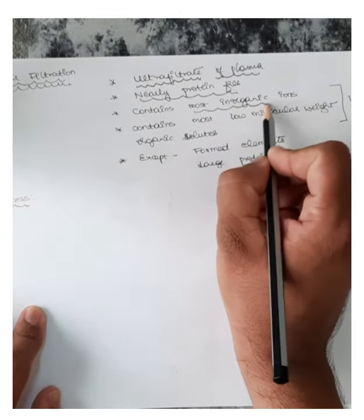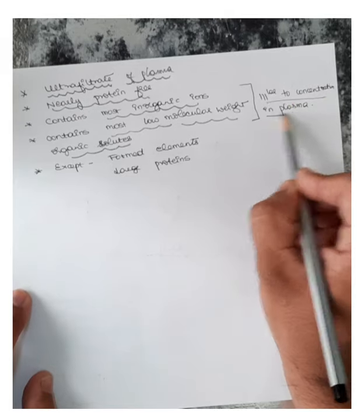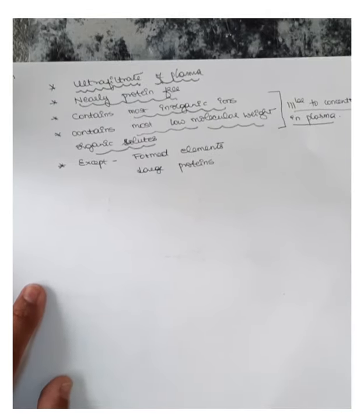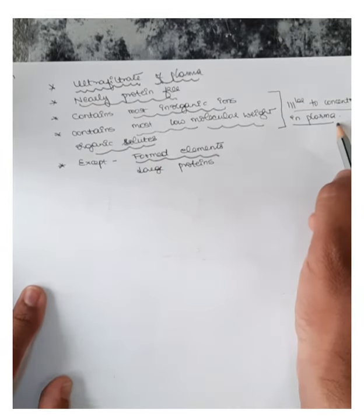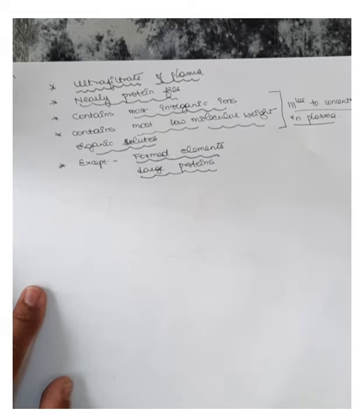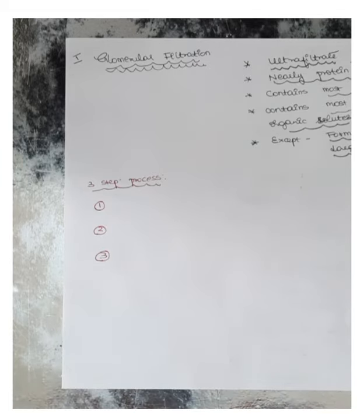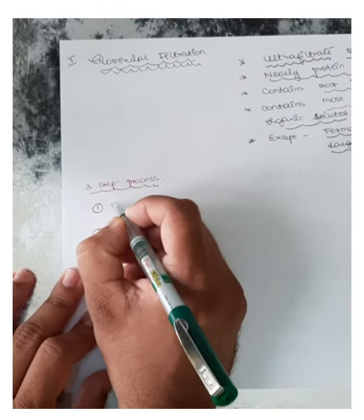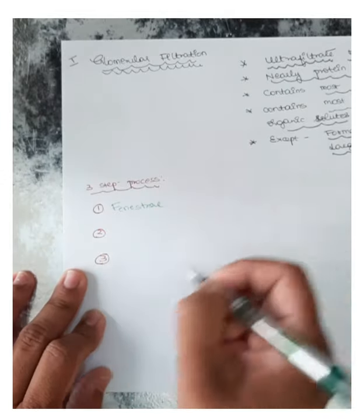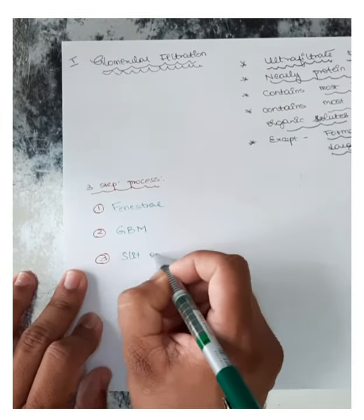The glomerular filtrate is a nearly protein-free filtrate. It contains most of the inorganic ions and most of the low molecular weight organic solutes at concentrations similar to that of plasma. Therefore the glomerular filtrate composition is similar to that of plasma except for the formed elements and larger proteins, which are absent. Glomerular filtration is a three-barrier process: the blood or plasma must pass through the fenestrae, then the glomerular basement membrane, and then the slit diaphragms.